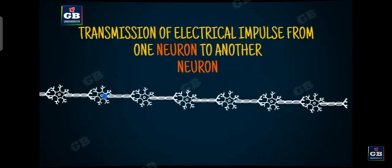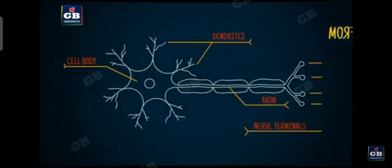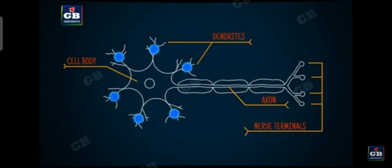The dendrites of the neuron receive the information. The axon passes the information to the next neuron. When the dendrites of a neuron receive the information, they start a chemical reaction that generates an electric impulse. This electric impulse travels from the dendrite to the cell body and then along the axon and finally reaches the nerve endings.